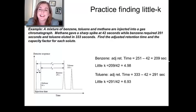Toluene, on the other hand, took 291, took longer to get through the column. And so, it has a little k that's larger, right around seven. So, pretty straightforward application of the definition of capacity factors, or little k.